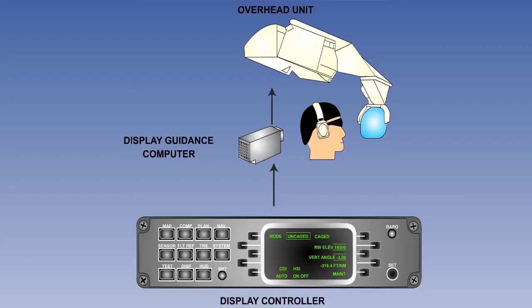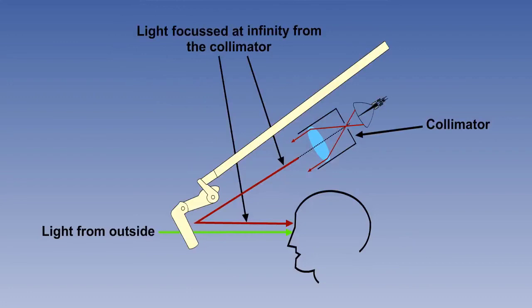First-generation systems have four basic components. These are a display controller, a display guidance computer, an overhead unit, and a combiner. There is also an ambient light sensor. The light from the overhead unit is focused at infinity. This is achieved by designing the projector as a collimator.